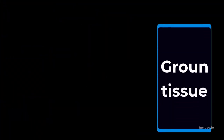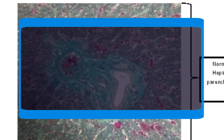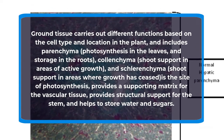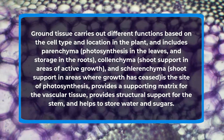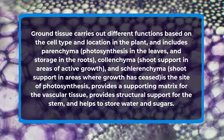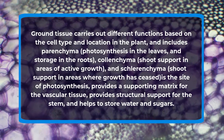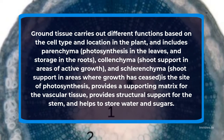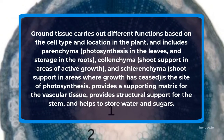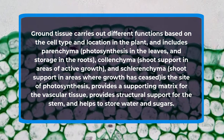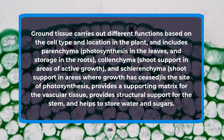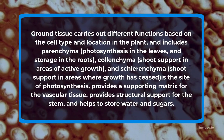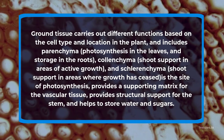Ground tissue. Ground tissue carries out different functions based on the cell type and location in the plant, and includes parenchyma — photosynthesis in the leaves and storage in the roots — collenchyma, which provides shoot support in areas of active growth, and sclerenchyma, which provides shoot support in areas where growth has ceased. Ground tissue also provides a supporting matrix for the vascular tissue, provides structural support for the stem, and helps to store water and sugars.